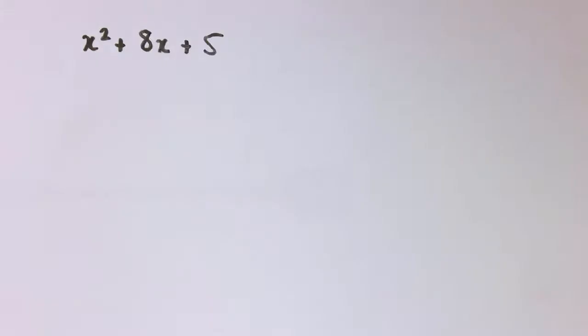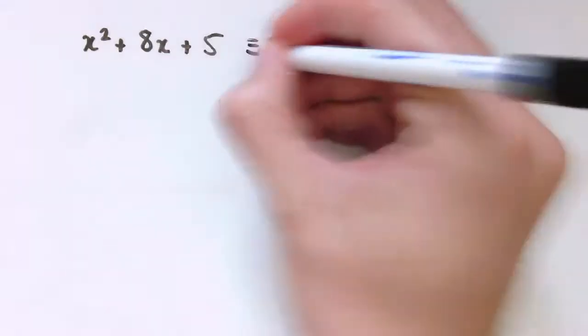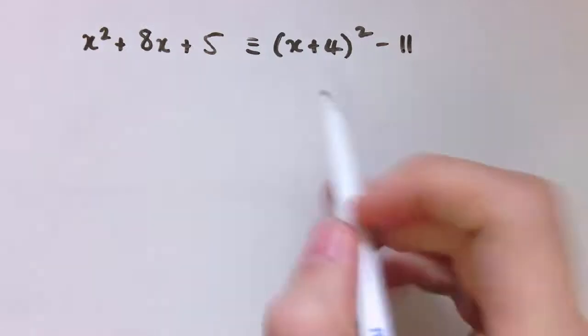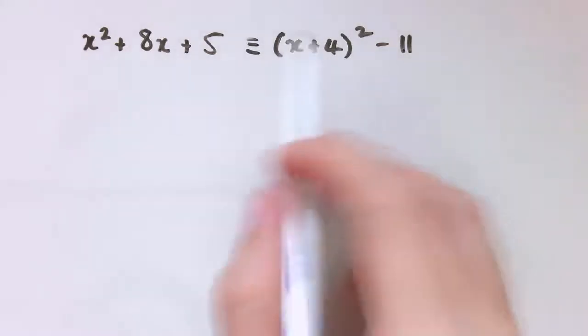So what completed square form is, it applies to quadratics, so something like this, I've got x² + 8x + 5, and it's in completed square form if I rewrite it like this, so x + 4 squared minus 11. So the completed square form is going to have something in brackets squared, something linear in brackets squared.